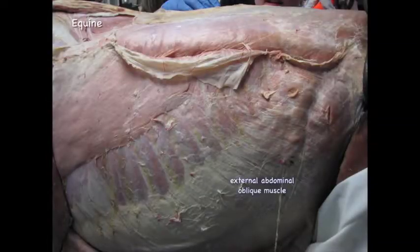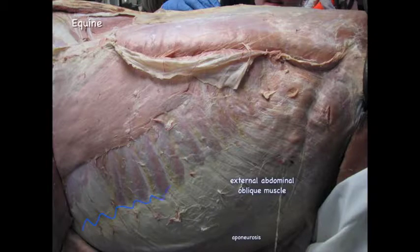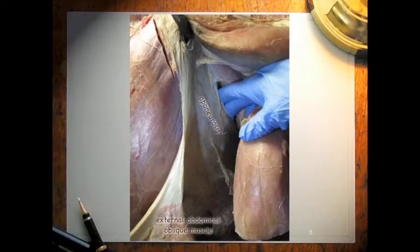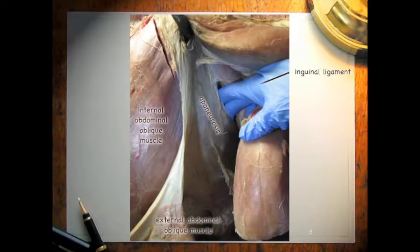The external abdominal oblique muscle originates from the 5th through 18th ribs. It inserts partially upon the tuber coxae, the prepubic tendon, and the linea alba. Between the tuber coxae and the prepubic tendon, there is a thickening known as the inguinal ligament, which is truly thickened and strengthened unlike what we saw in the dog.